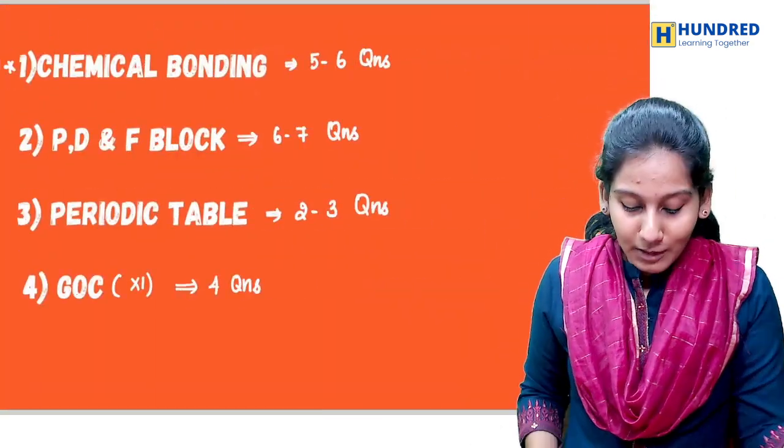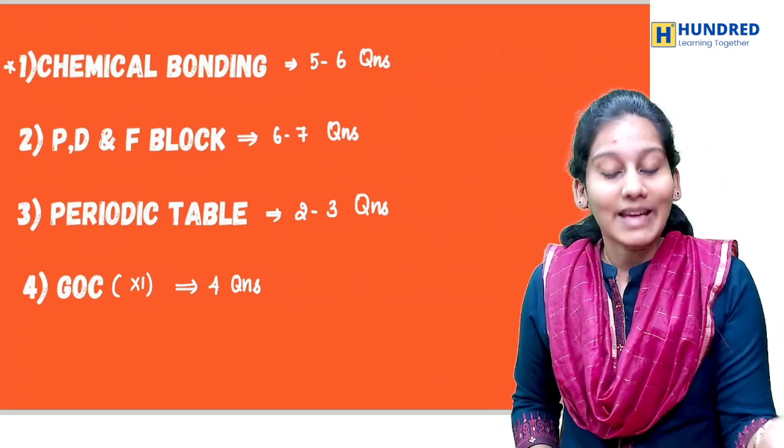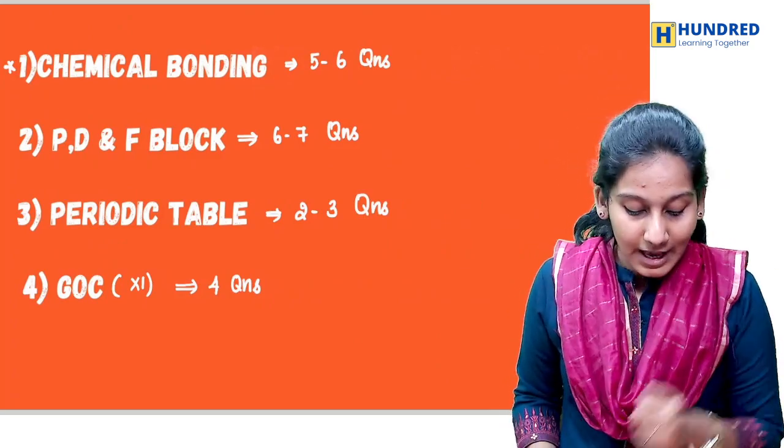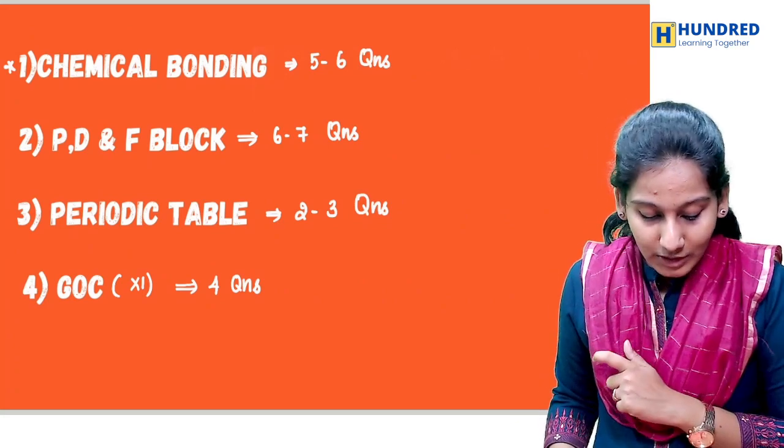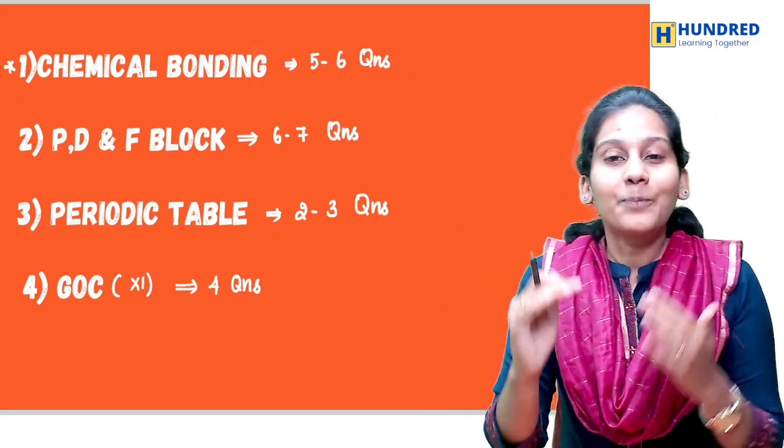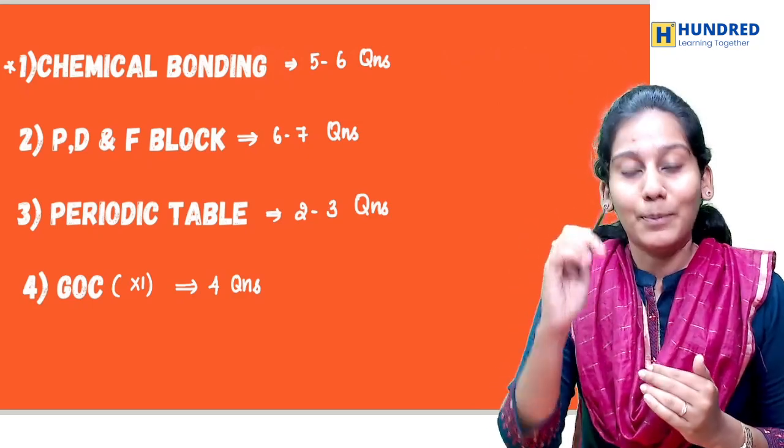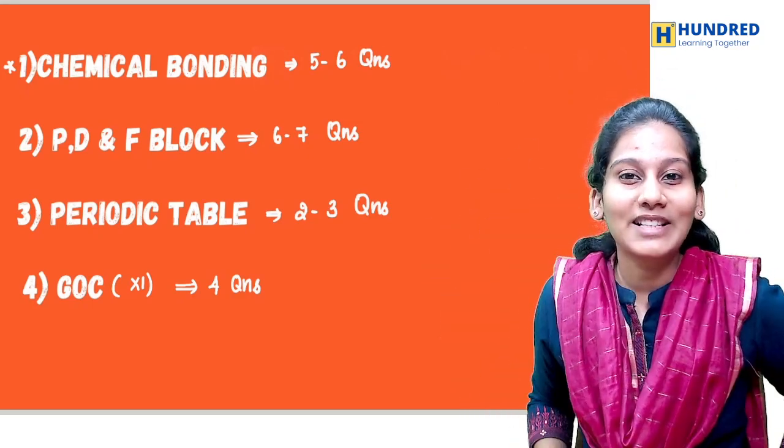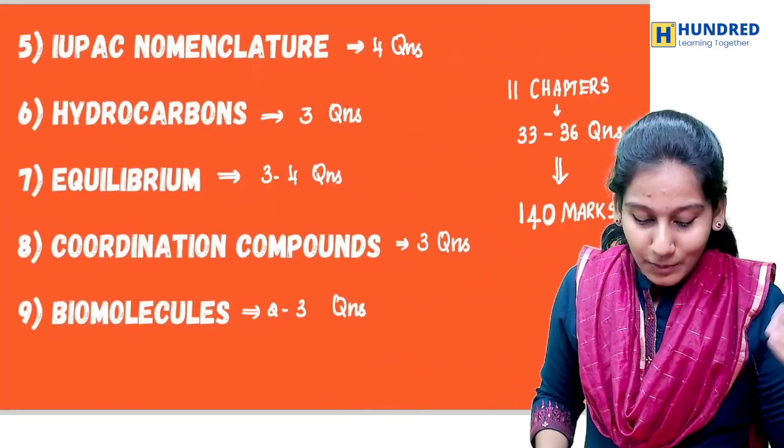In Chemistry - Chemical Bonding, 5 to 6 questions. P, D and F block, 6 to 7 questions. Periodic table, 2 questions. GOC, 4 questions. Especially guys, this syllabus is half-sized, but rank is double or triple. Nomenclature, Hydrocarbons, 3 to 4 questions.